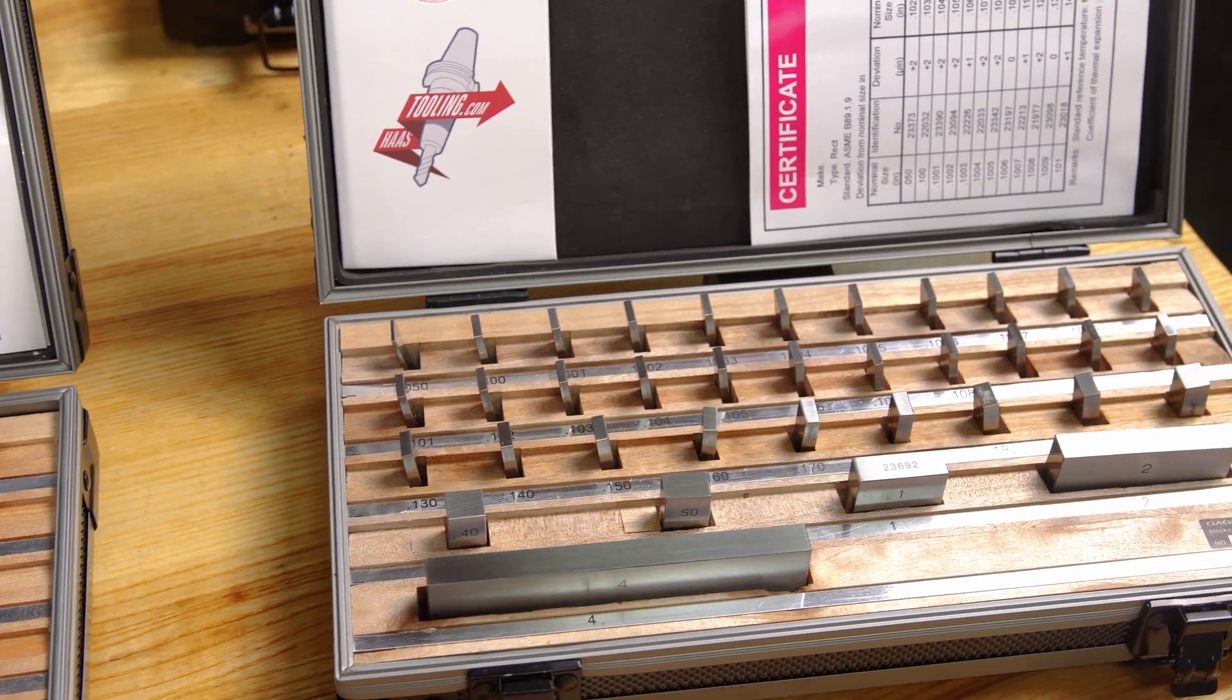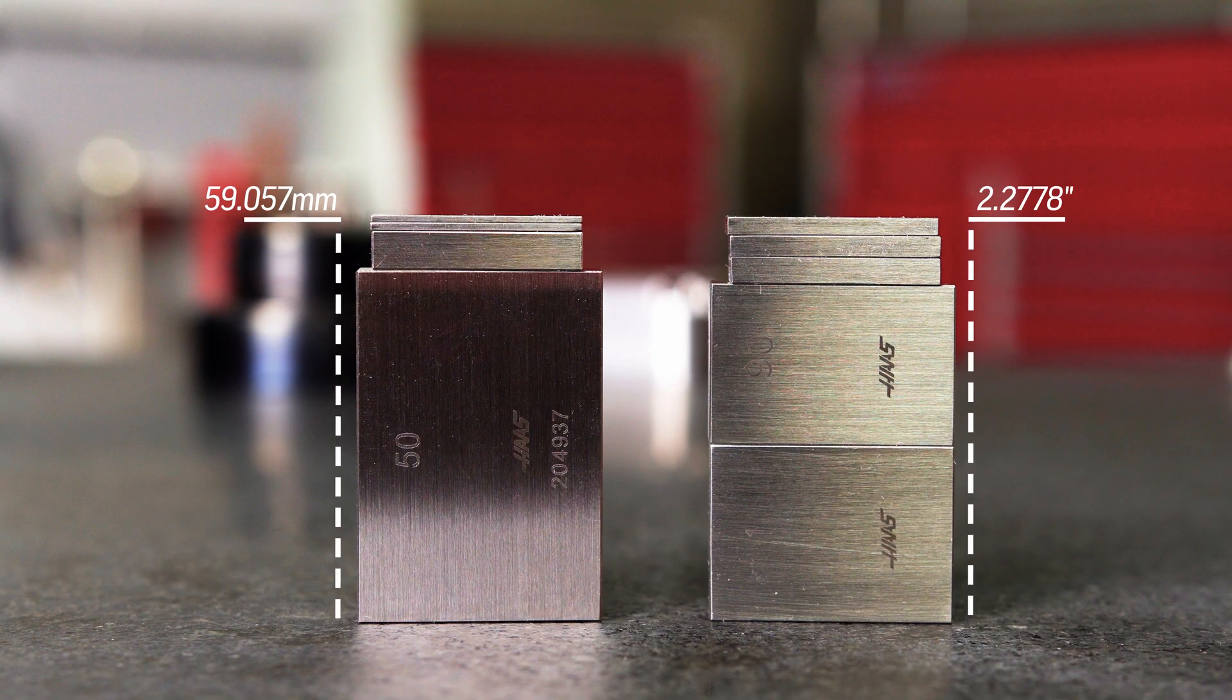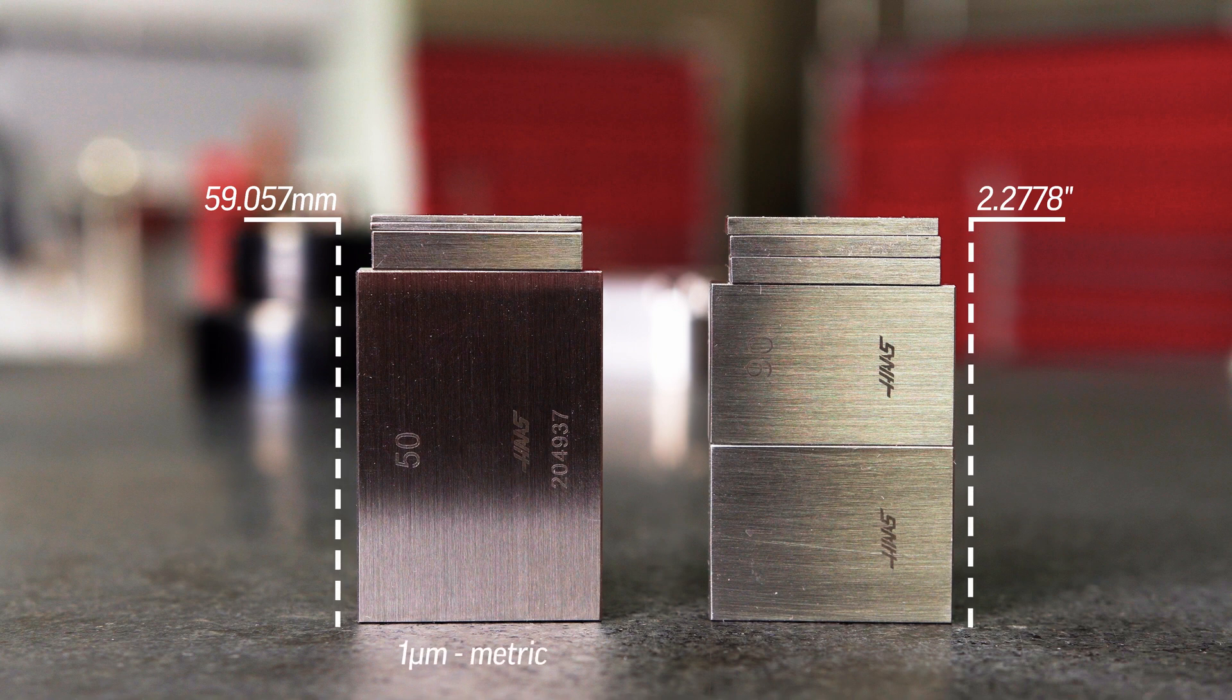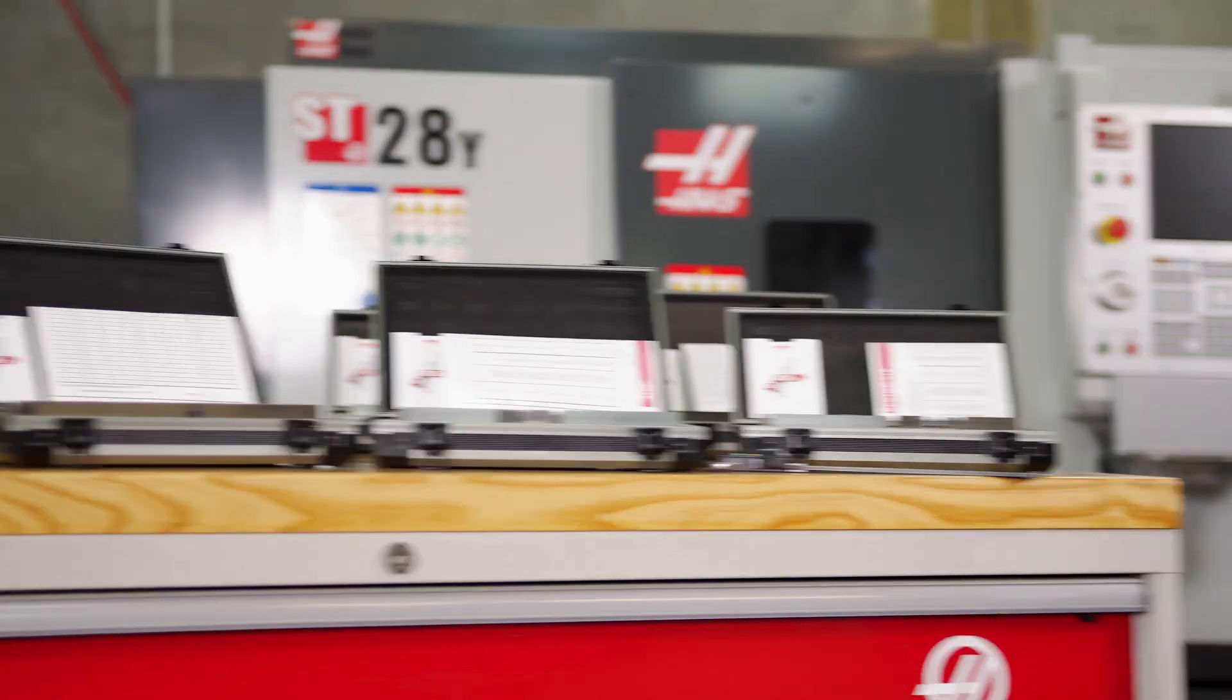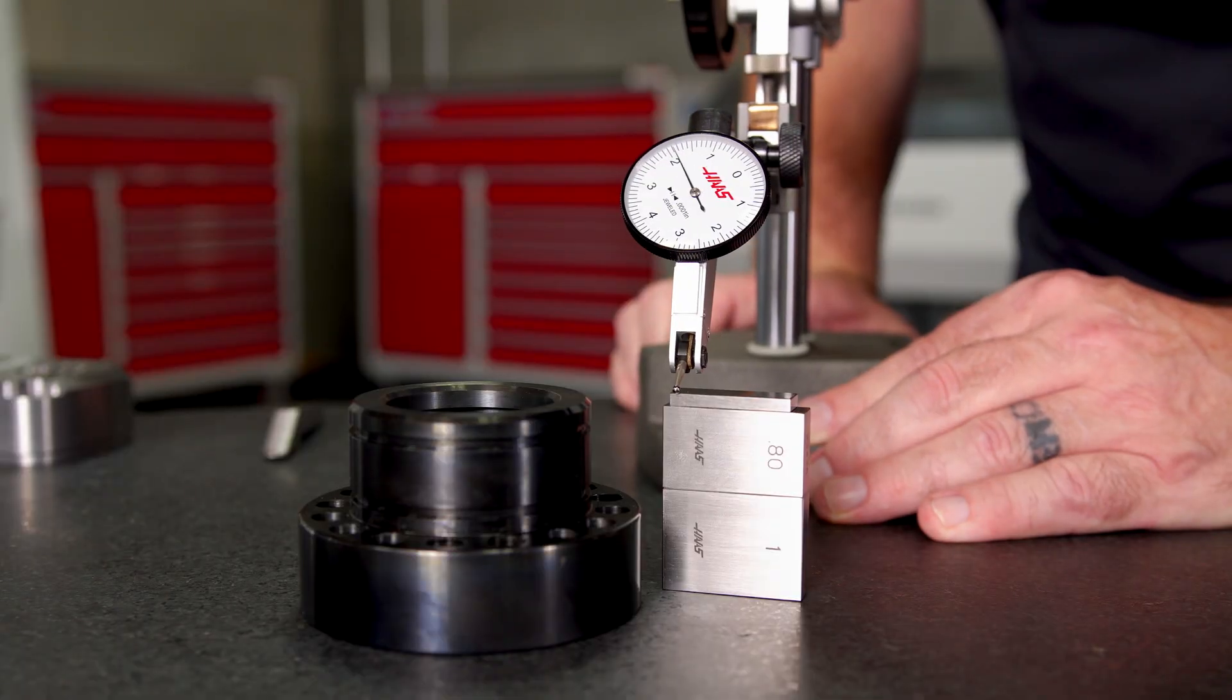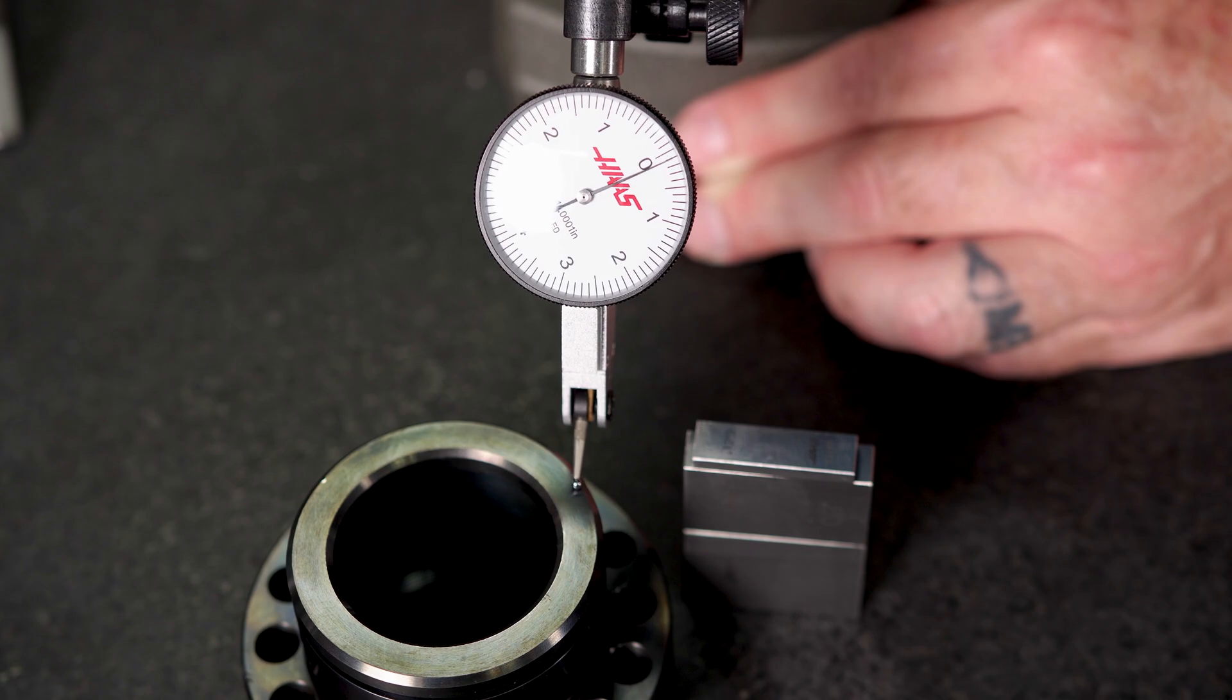Pick a number. Any number, and we can create a stack of gauge blocks to that height in increments of just one micron for our metric sets or one-tenth of a thou for our inch sets. Placed on a granite surface plate, our gauge blocks can be used as a reference to measure the height of a part or feature with incredible precision.